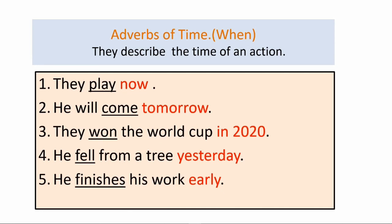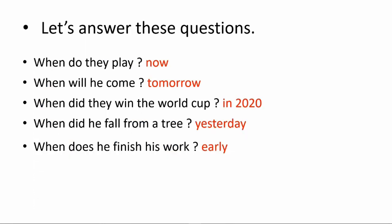Now we are moving to the next category — adverbs of time. It tells when the action takes place. Look at these sentences: They play now. He will come tomorrow. They won the world cup in 2020. He fell from a tree yesterday. He finishes his work early. When do they play? Now. When will he come? Tomorrow. When did they win the world cup? In 2020. When did he fall? Yesterday. When does he finish his work? Early.